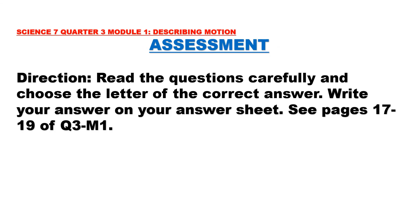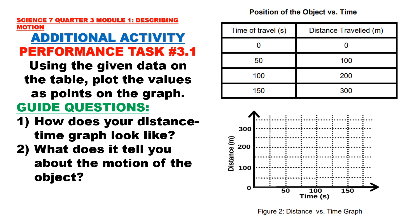For your assessment, read the questions carefully and choose the letter of the correct answer. Write your answer on your answer sheet — see pages 17-19 of Quarter 3, Module 1. Additional Activity — Performance Task 3.1: Using the given data on the table, plot the values as points on the graph. Position of the object versus time: at 0 seconds, 0 meters; at 50 seconds, 100 meters; at 100 seconds, 200 meters; at 150 seconds, 300 meters.